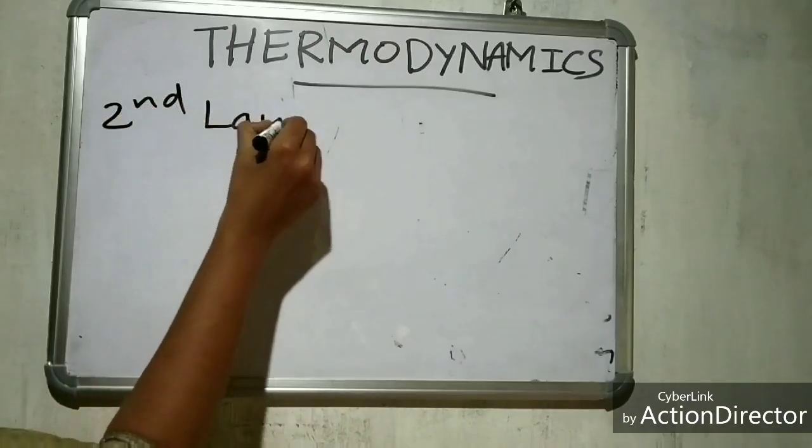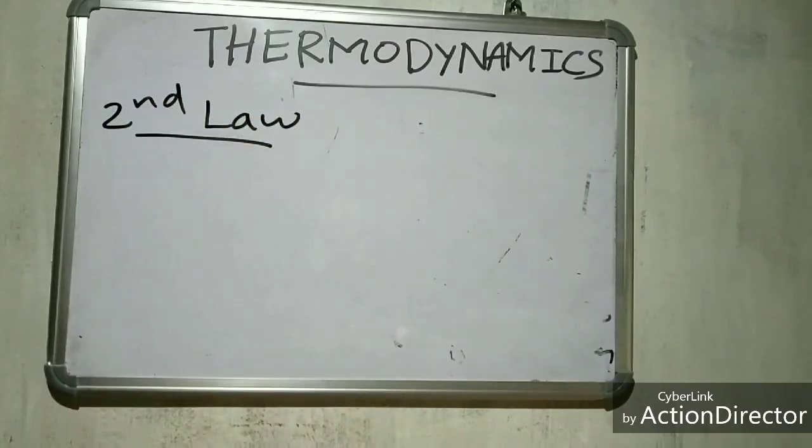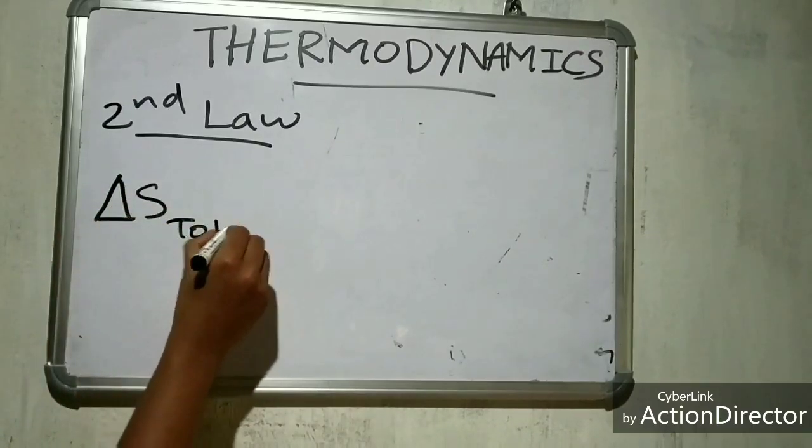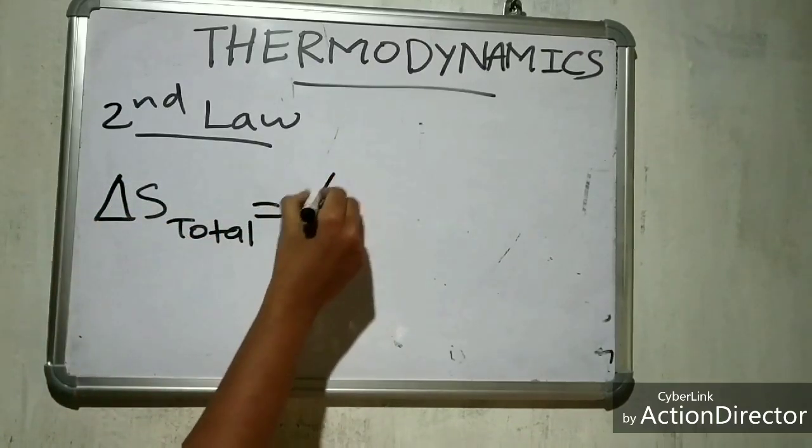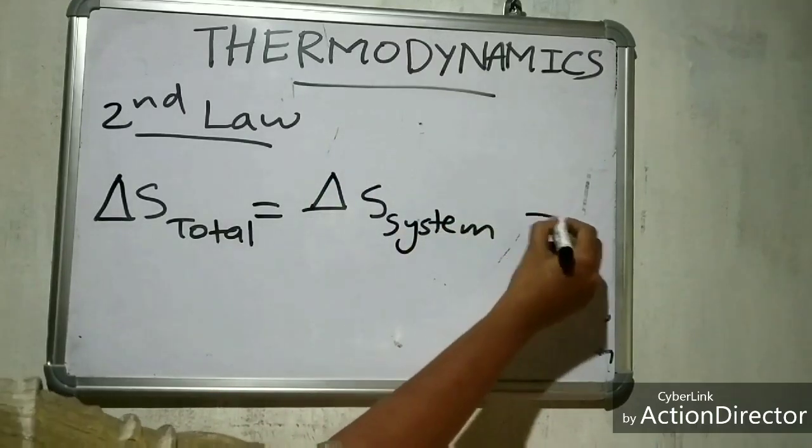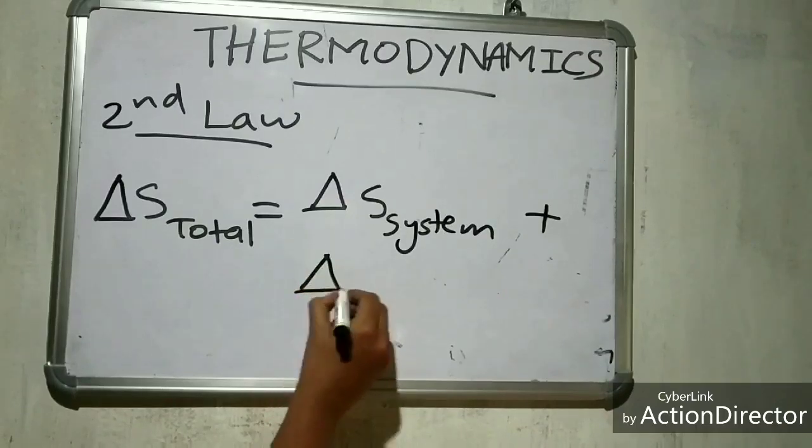The second law: The total entropy of the universe must increase in every spontaneous process. That is delta S total is equal to delta S system plus delta S surroundings. Here delta S denotes the entropy.